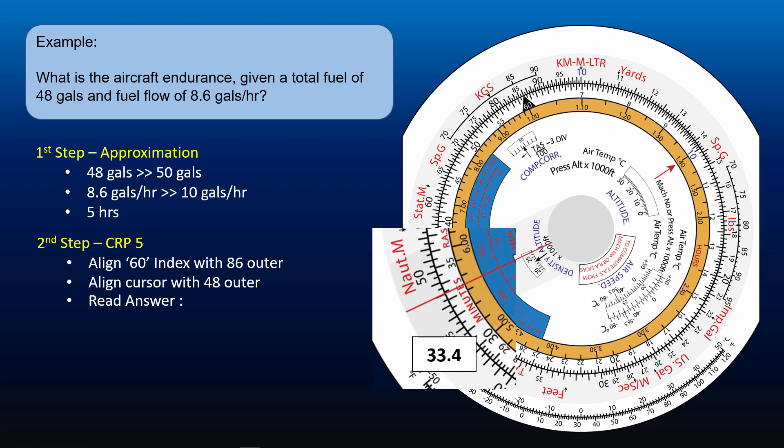Our ballpark figure implies that our endurance is in the range of 5 hours. Therefore, our answer is 334 minutes or 5 hours 34 minutes. Note, this answer in hours and minutes can be read directly from the orange scale.